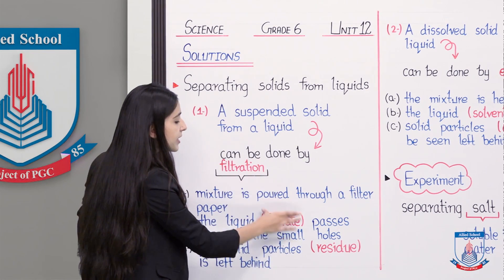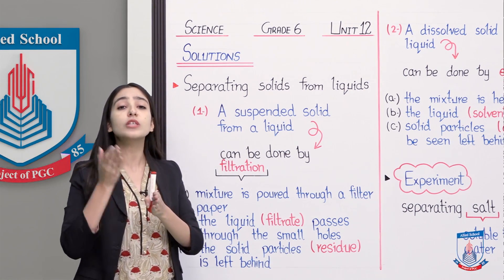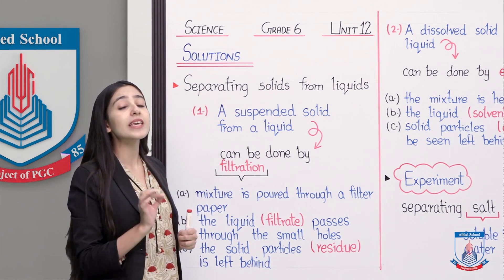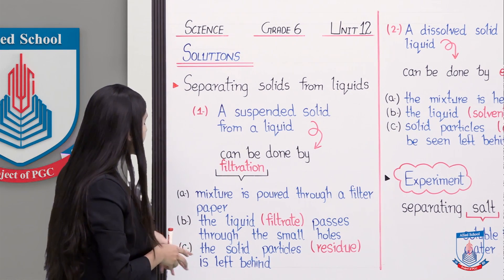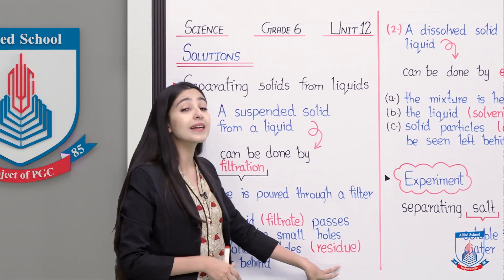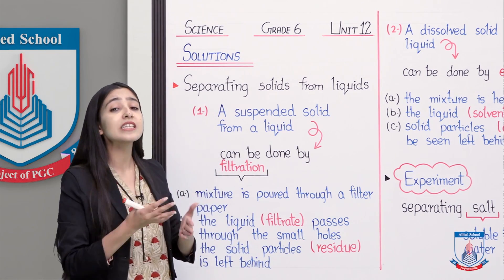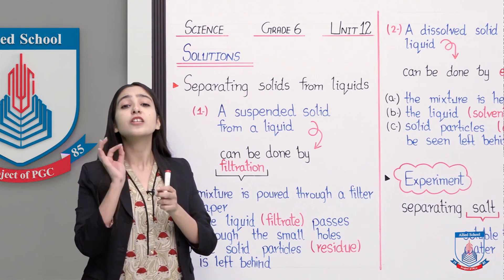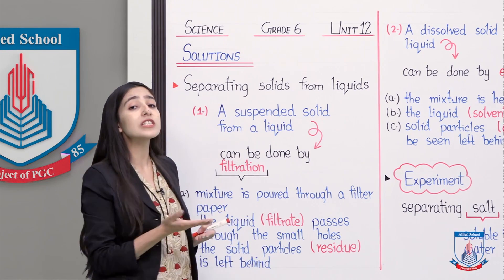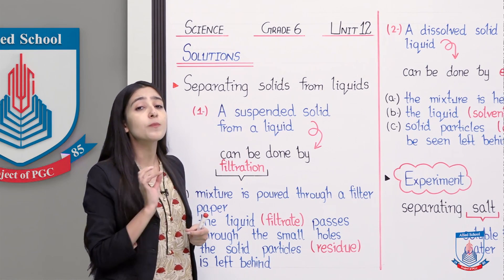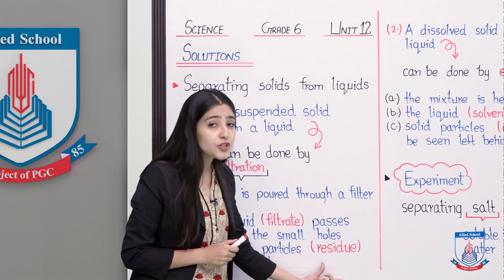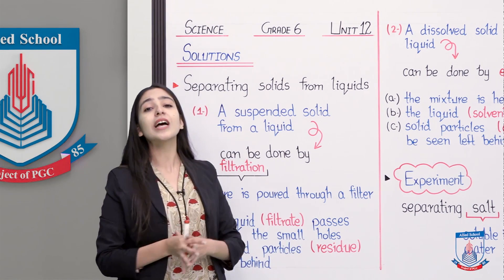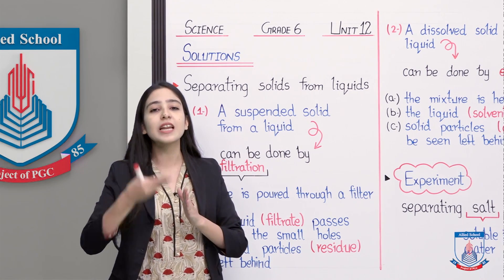When we pour the mixture into the filter paper, the clear liquid passes through and we give it the name filtrate. Then we have the solid particles — step C says the solid particles are left behind. The solid particles are called residue. Residue is the thing that is left behind. Since the clear liquid passed through, the solid particles are left behind on the filter paper as residue. When we talk about residue, we are talking about solid particles. When we talk about filtrate, we are talking about the liquid that passed through the filter paper.